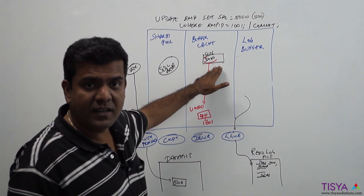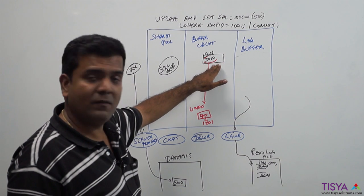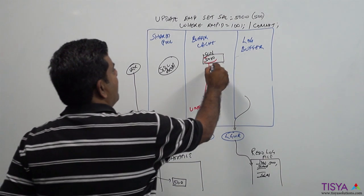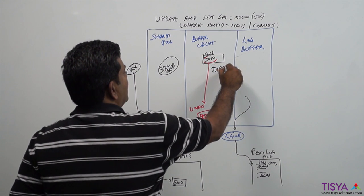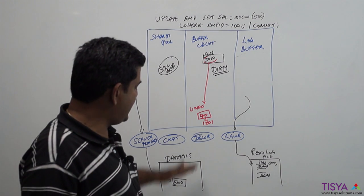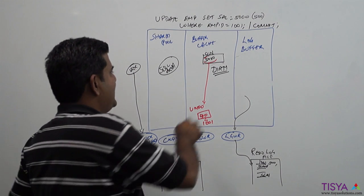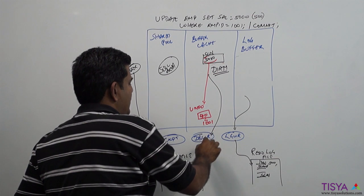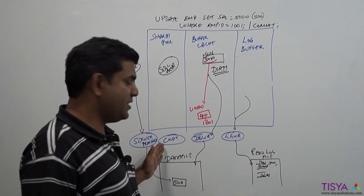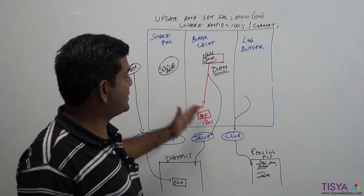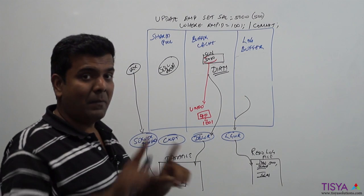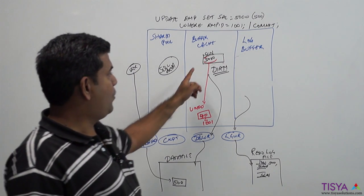It is not necessary for the buffer which is updated to be written down here. This buffer is now marked as a dirty buffer and it will be written down to the data file whenever the DB writer is initiated. That can happen at various circumstances: whenever a checkpoint is initiated, or whenever the buffer cache is getting filled with no free blocks. At that time this will get written, but there is no necessity that whenever a commit is issued the data file has to be updated.